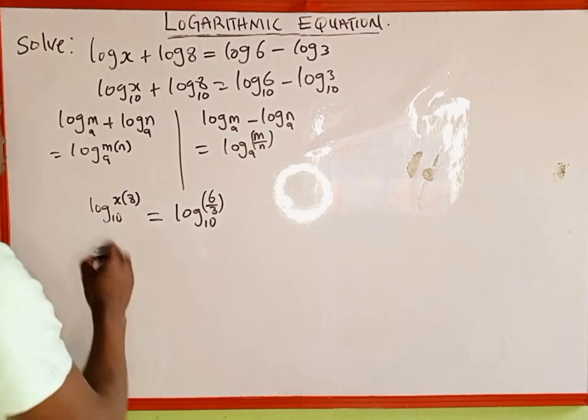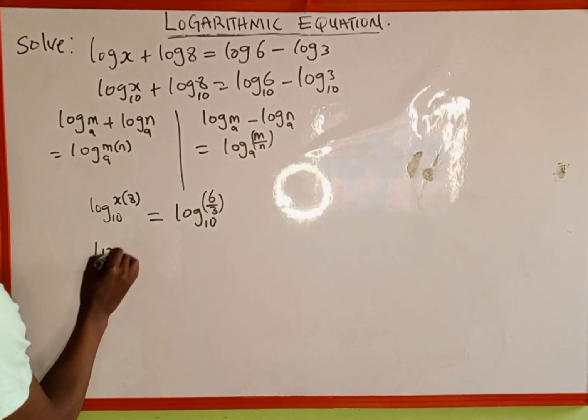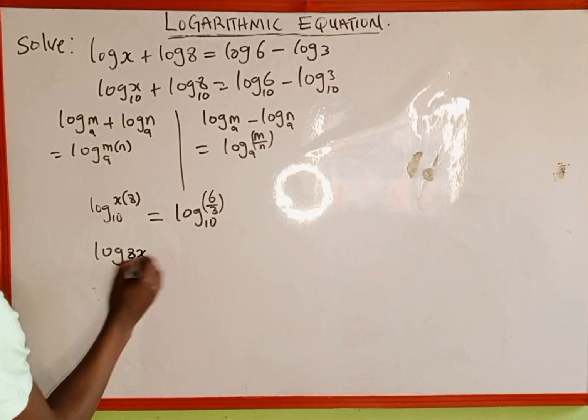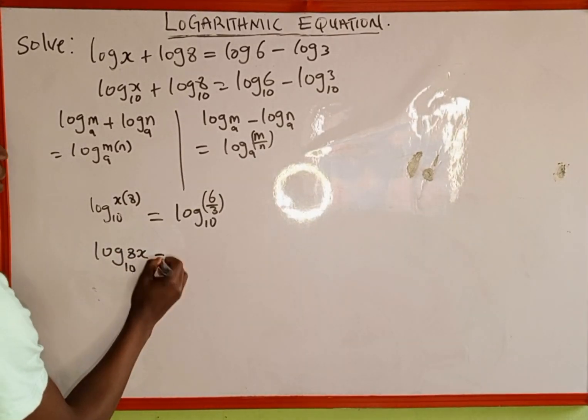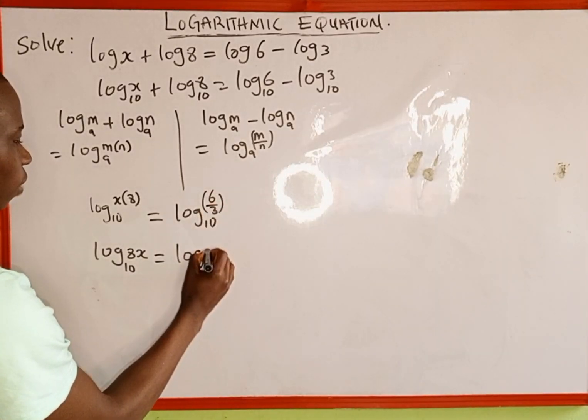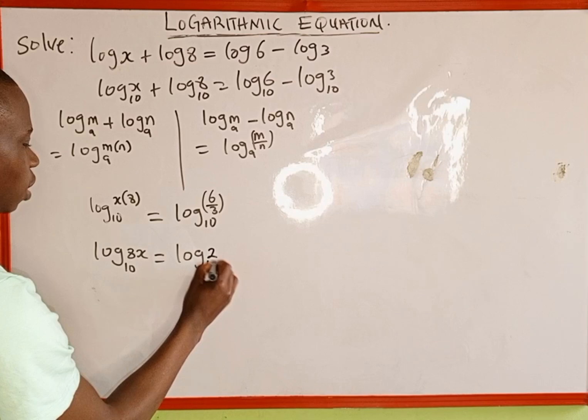So the next thing is to simplify this. We are going to have log of 8x to the base of 10, which is equal to log of 2 to the base of 10, since 6 divided by 3 is 2.